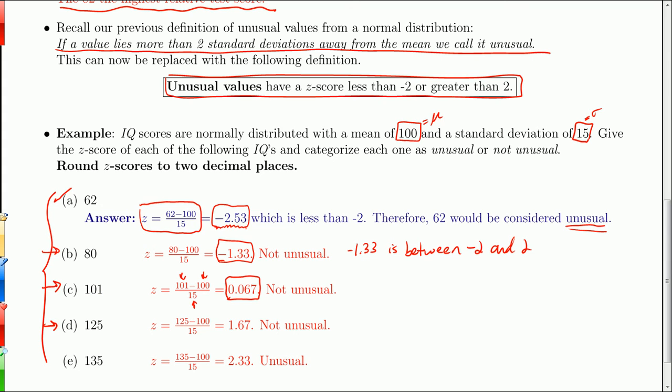Going to 125, that's getting up there. But when you plug the numbers into the formula, you get 1.67. It's 1.67 standard deviations above the mean. That's pretty high, but it is not unusual because it's not above 2.